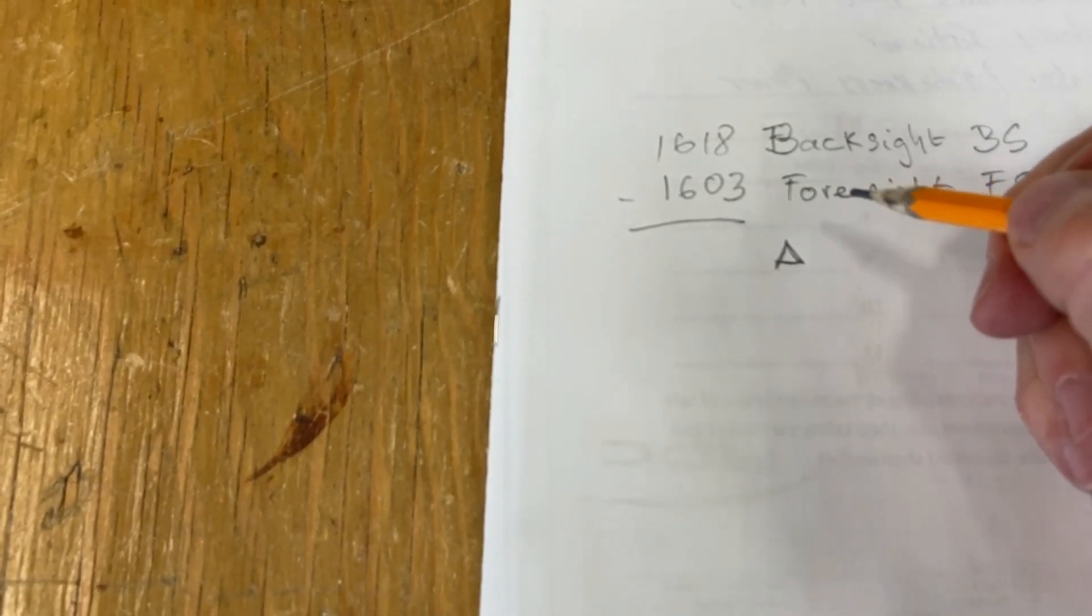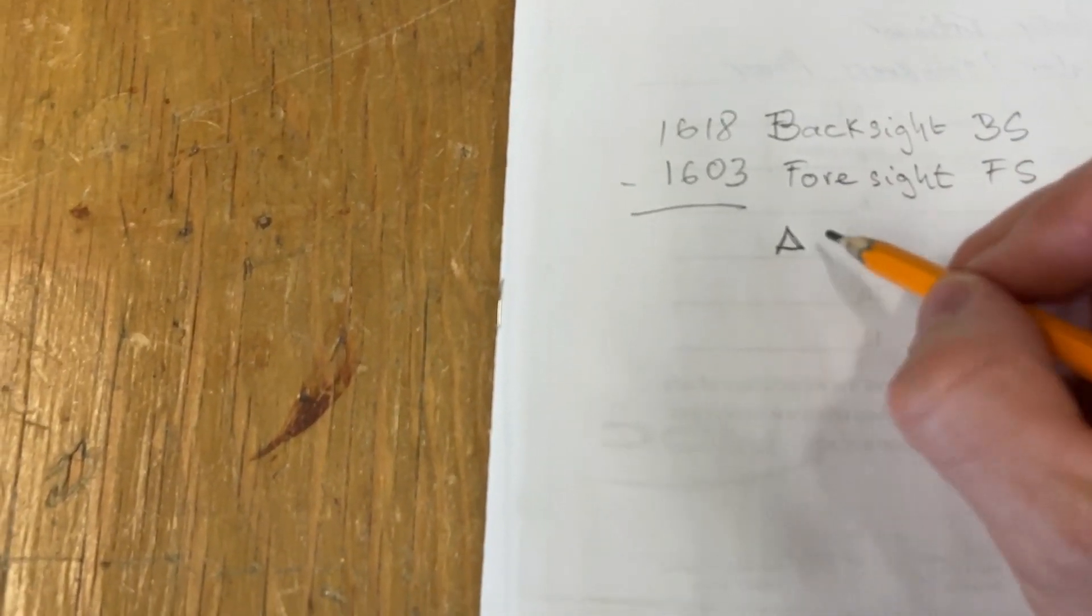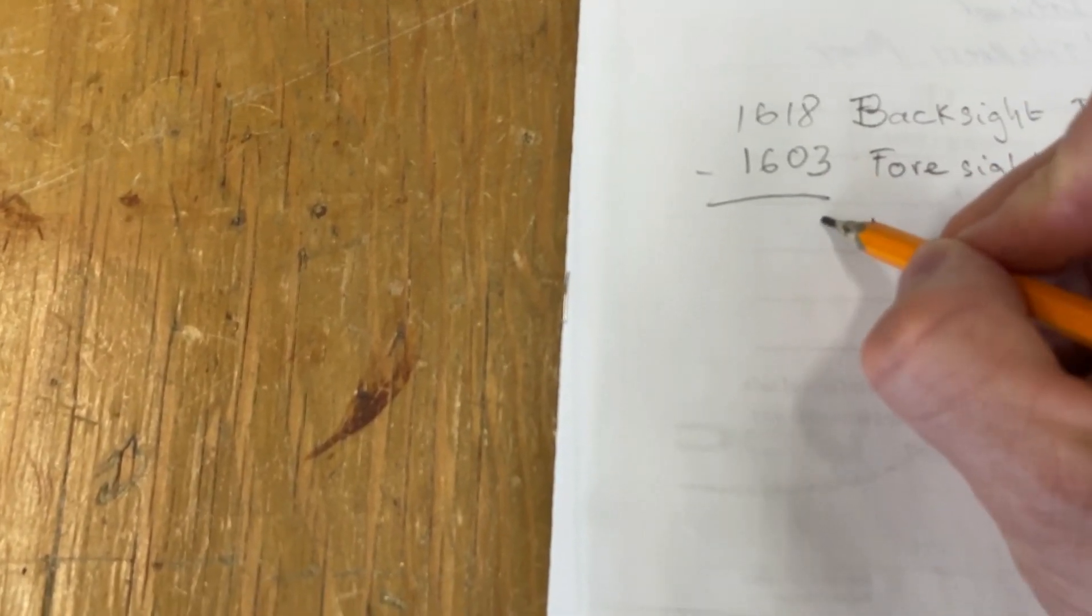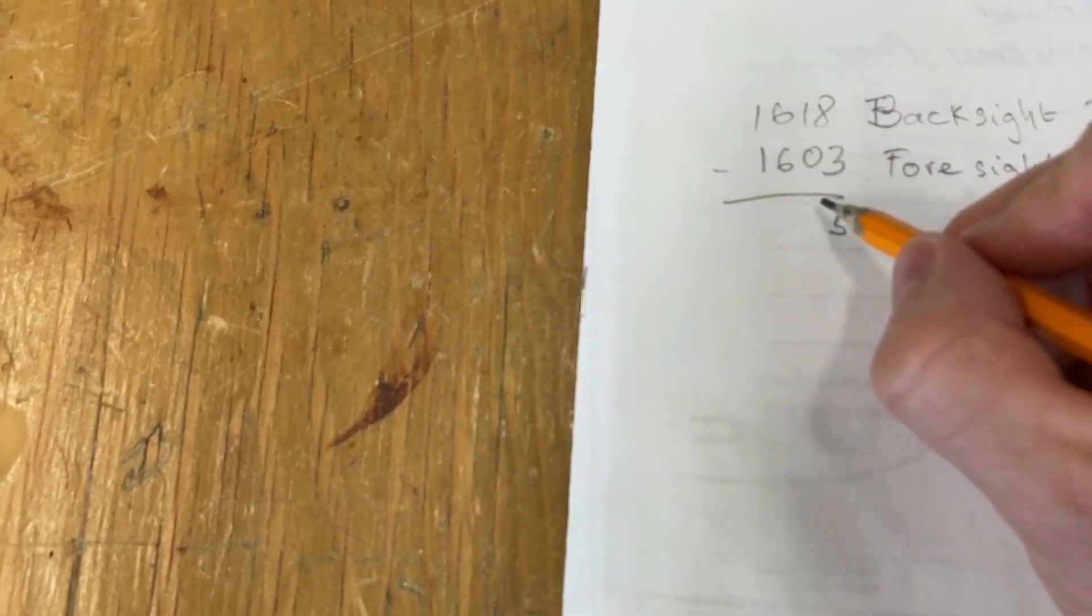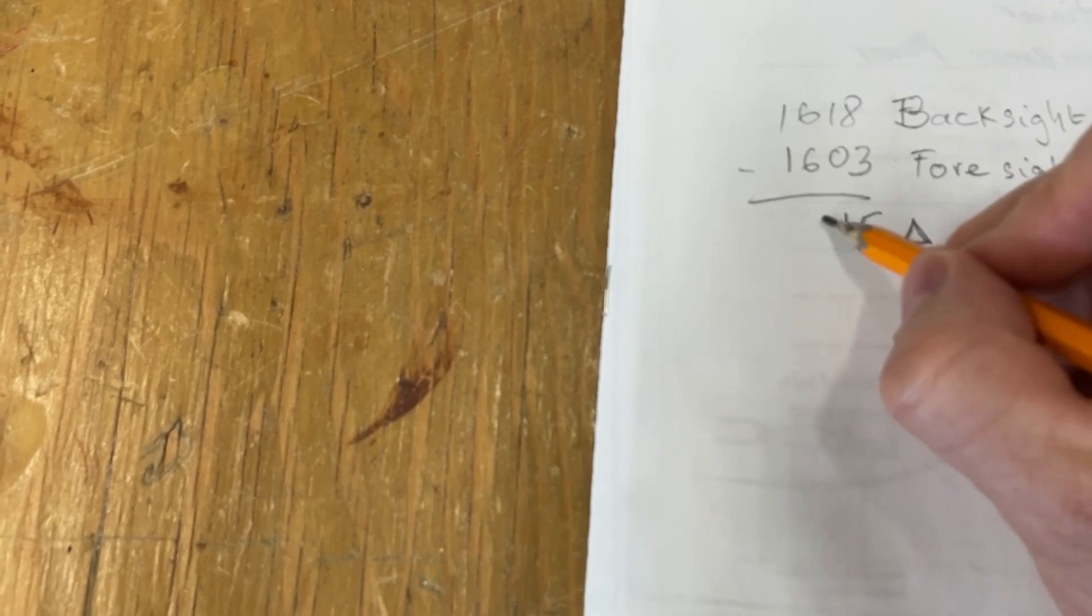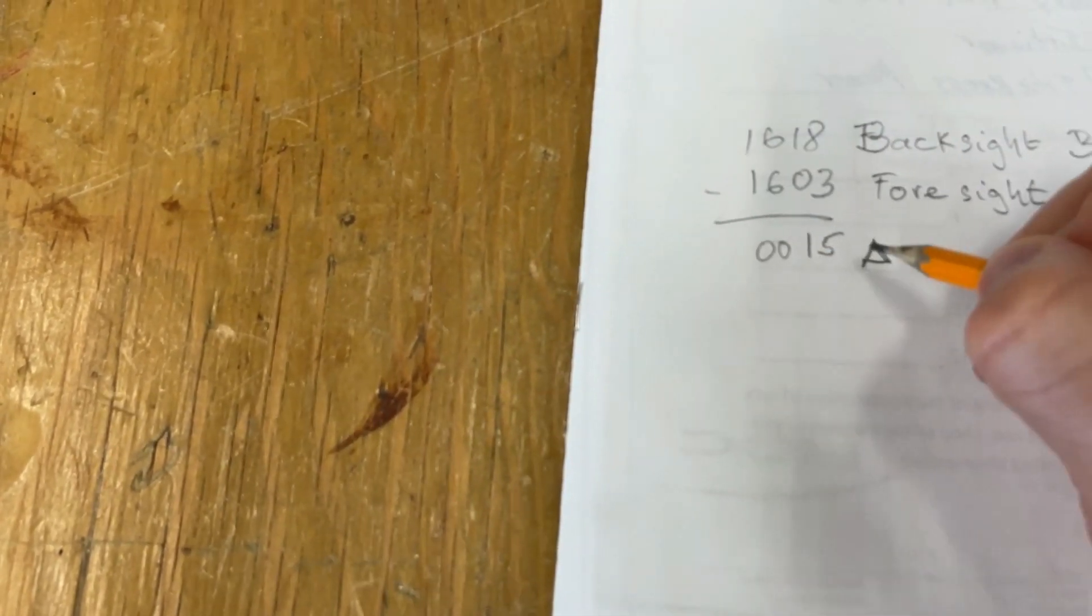So the difference between them, that's a triangle, so that's a Greek letter delta, okay, so difference in elevation. That's what it stands for. 8 minus 3 is 5, 1 minus nothing is 1, 16 minus 16 is nothing. The difference between them is 15 millimeters.